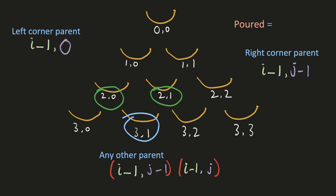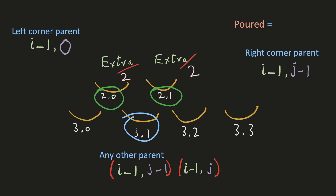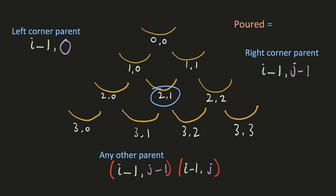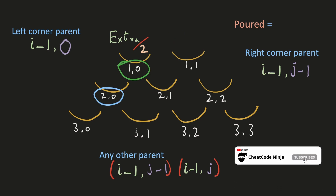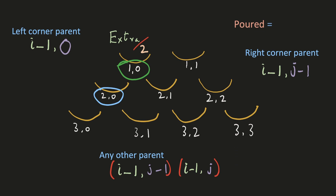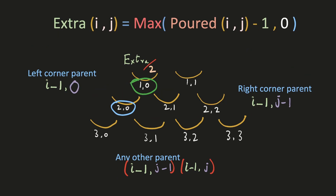A glass receives half of the extra liquid from each of its two parent glasses. To find the extra, we subtract 1 from the amount poured into the parent glass — anything above 1 unit is extra. So the formula is: extra = max(amount_poured - 1, 0). We take the maximum with 0 because if less than 1 unit was poured, subtracting 1 gives a negative number, and extra liquid cannot be negative.